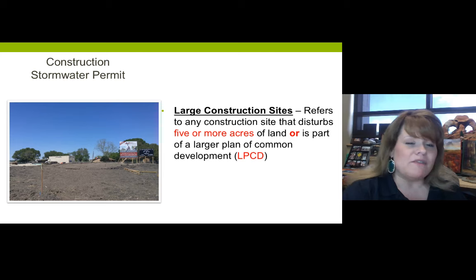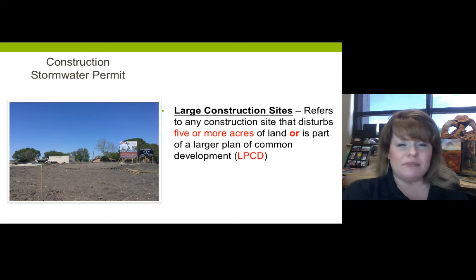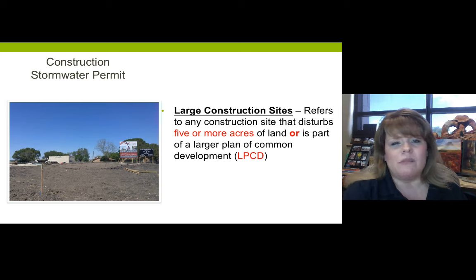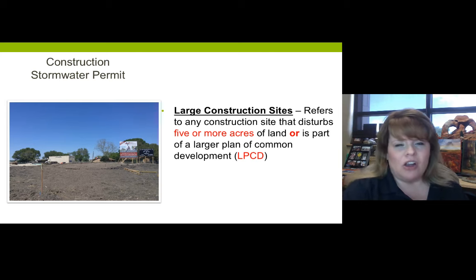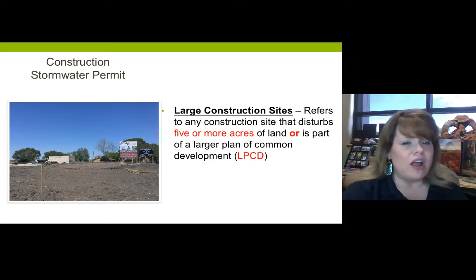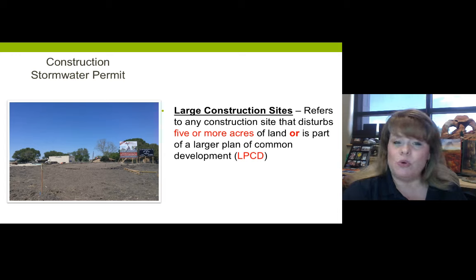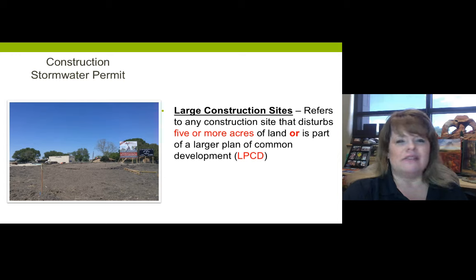We'll start with the construction permit first. There are several different types of construction stormwater permits, and we'll cover all of them. They're all general permits. The first one is large. A large construction site refers to any construction site that disturbs five or more acres of land, or — very important 'or' here — is part of a larger plan of common development.